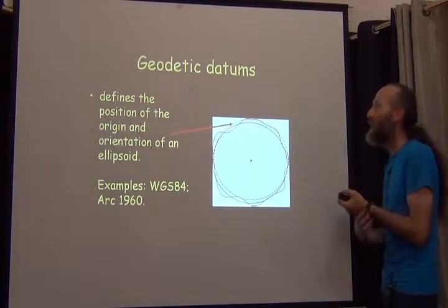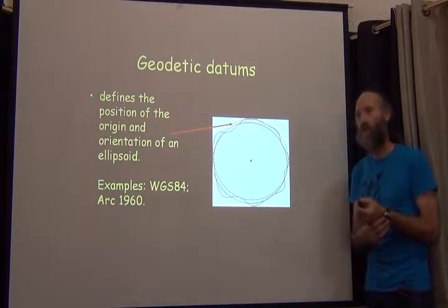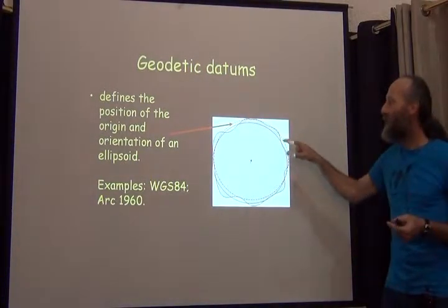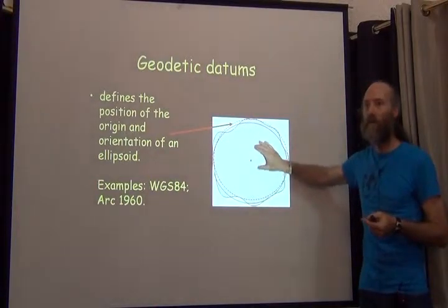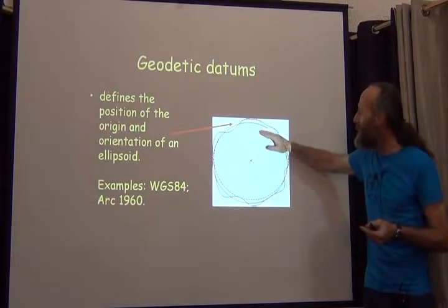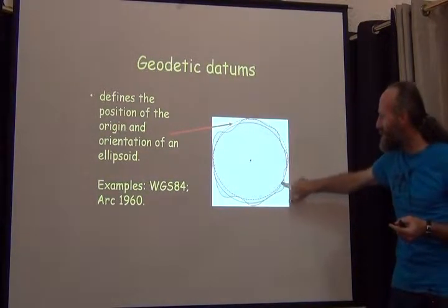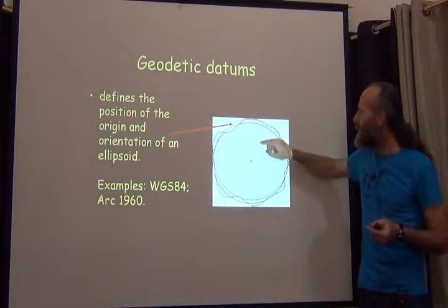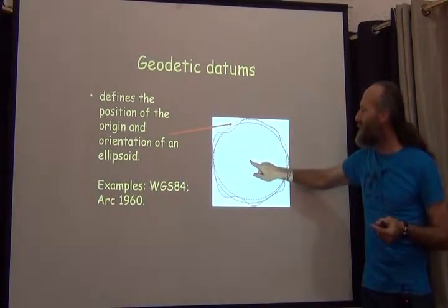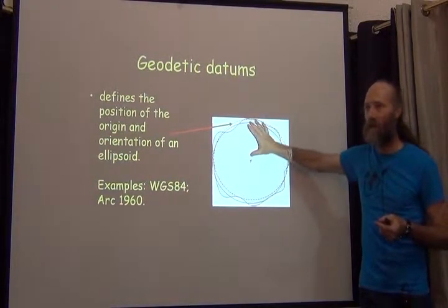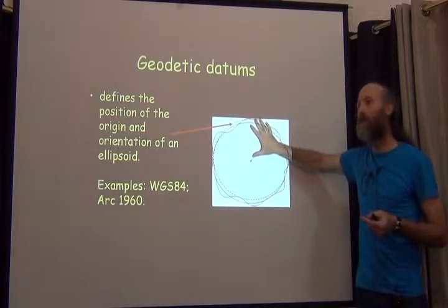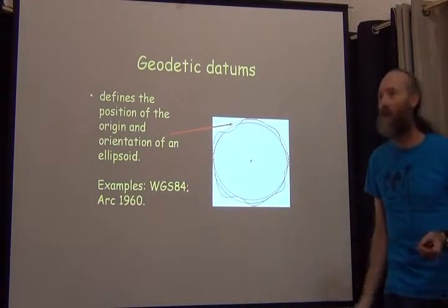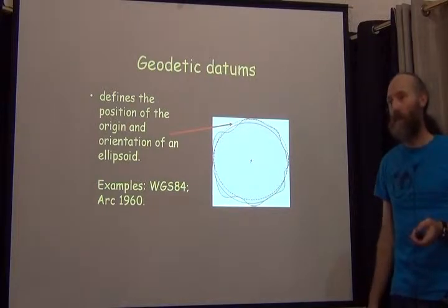A geodetic datum takes that same idea one step further. Ellipsoids are meant to try to match the whole surface of the Earth or some part of it. A datum takes an ellipsoid and moves it from the center of the Earth one way or the other to match locally. So here we have an ellipsoid in the solid line and the same ellipsoid in the dotted line, but in order to match the Earth better here, we take the ellipsoid and move it slightly in that direction. A datum is a definition of an ellipsoid that has been moved to match the surface of the Earth in some particular area. Whereas there are about 20 different ellipsoids, there are over 200 datums in the world.